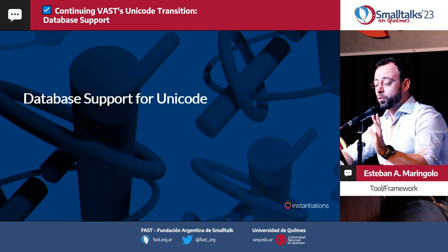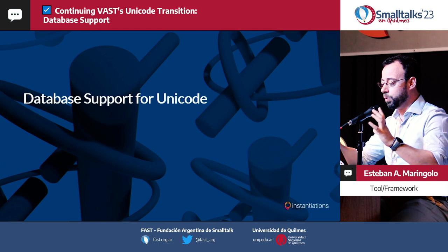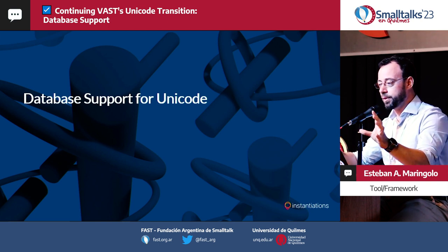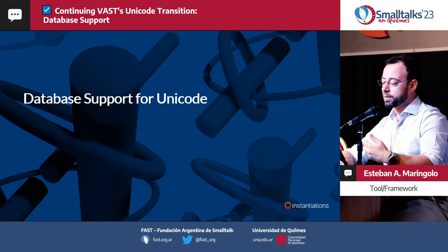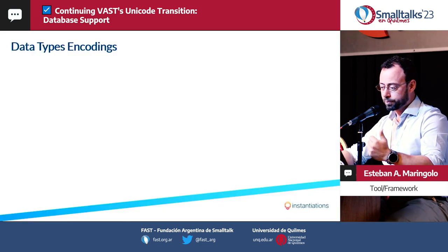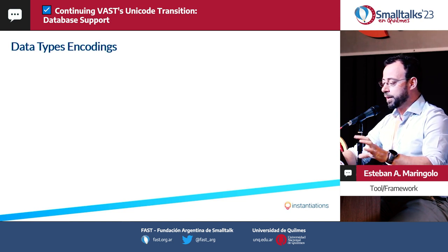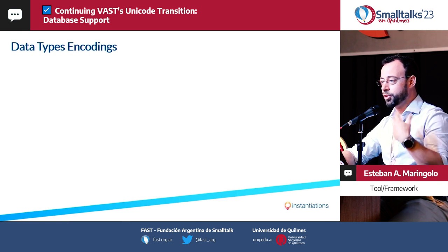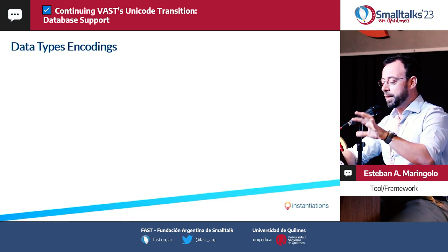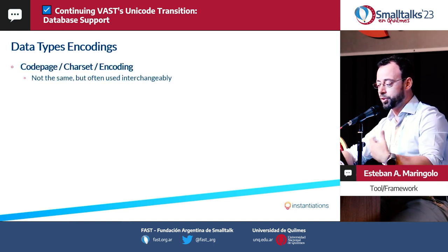So at this point we know what a code page is, how Unicode separates code points and encoding, and how VAST deals with different types of strings. Now, the question is: how do databases support Unicode? It's worth mentioning that the terms code page, charset, and encoding are used interchangeably, even when they mean different things. For the most part, I will use the word 'encoding,' which is the term often used in the Unicode context.